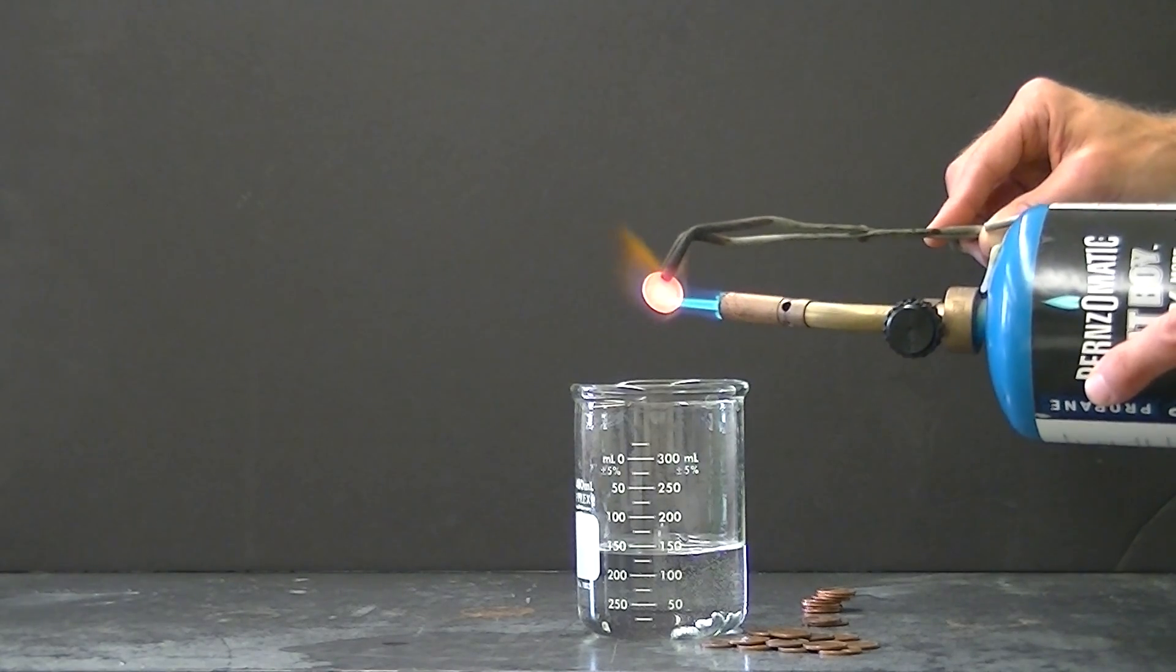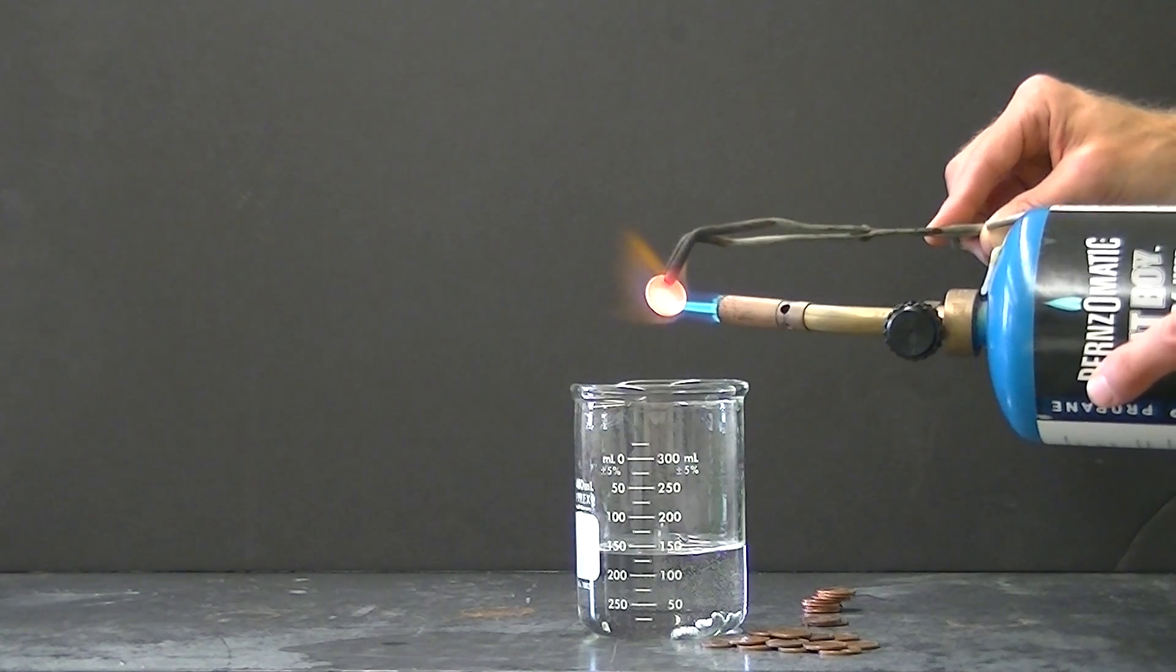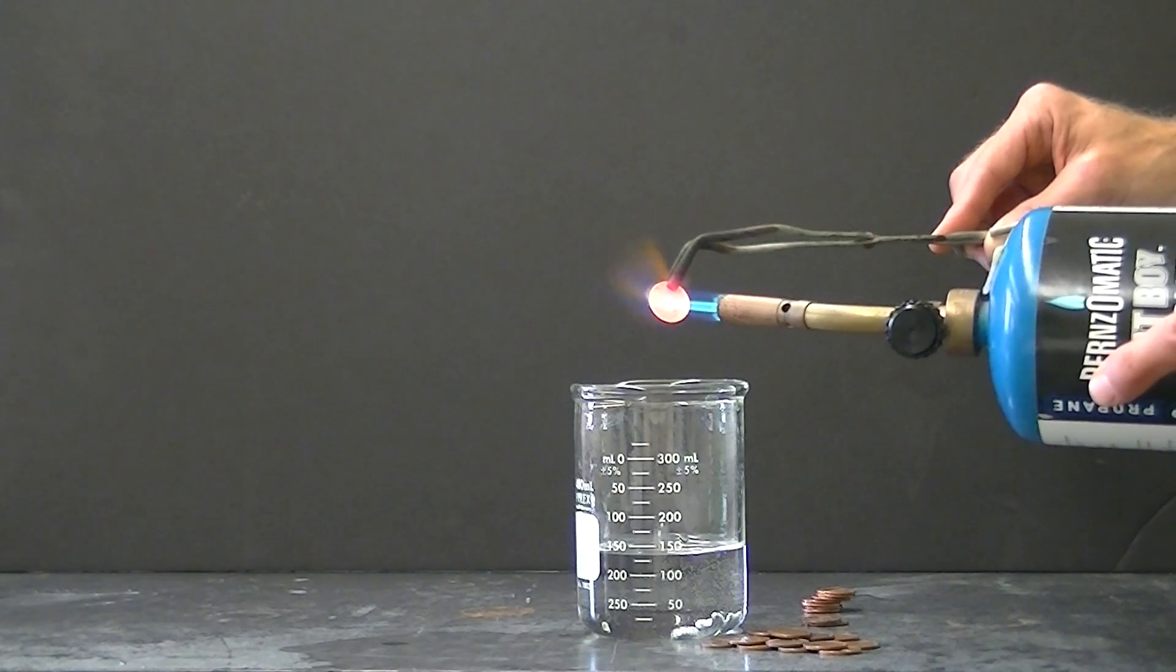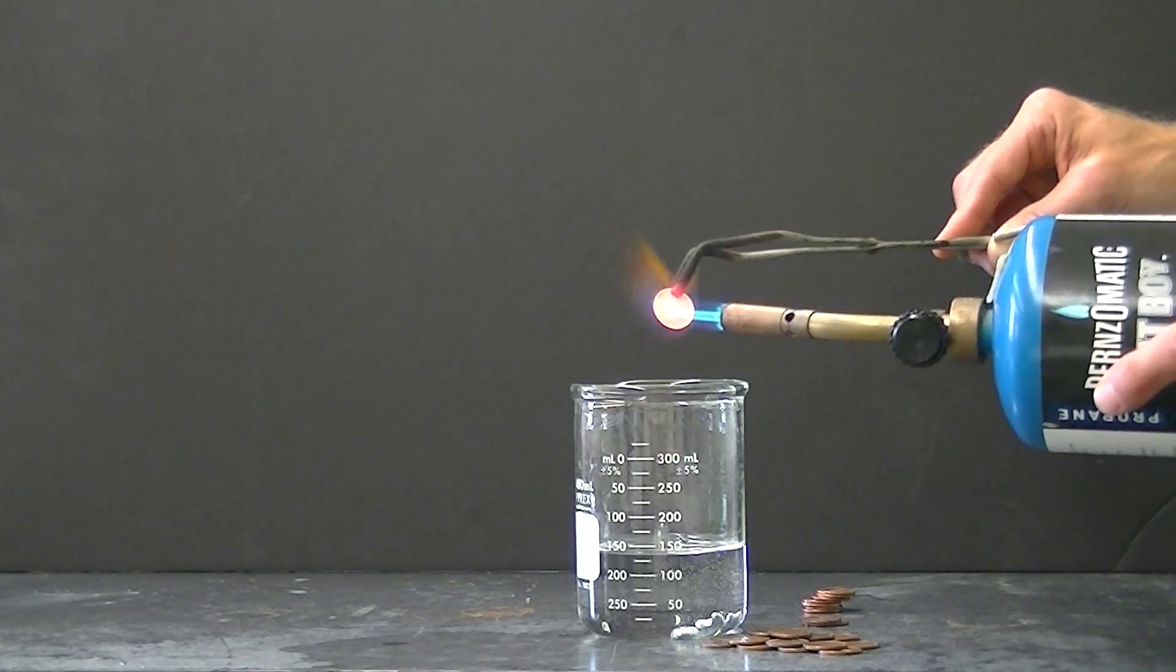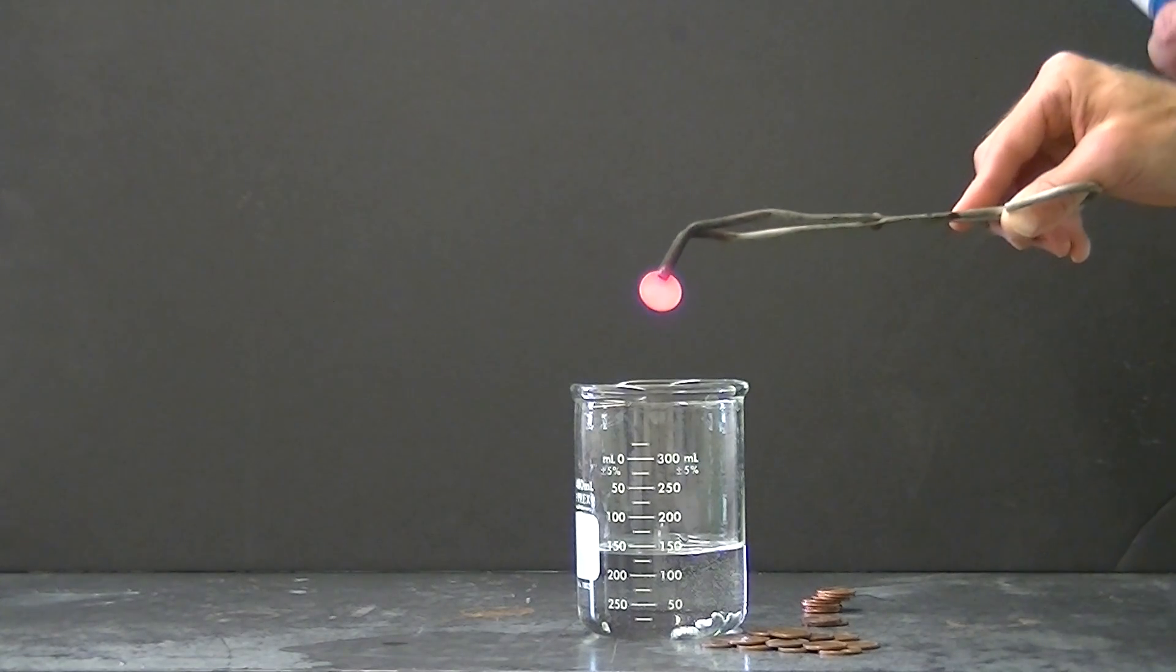I'm going to go ahead and continue to heat this penny. And when I first remove the flame you'll probably be able to see the characteristic color of copper behind the glow. But over time that'll fade to black.